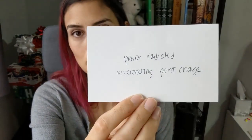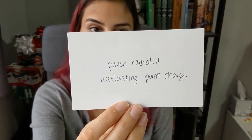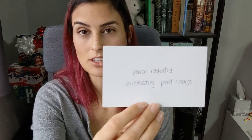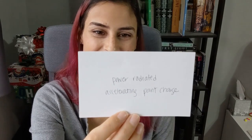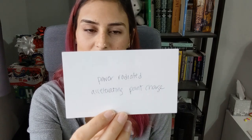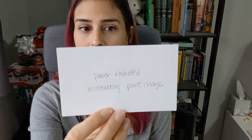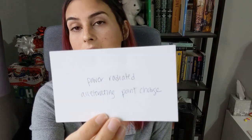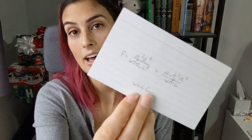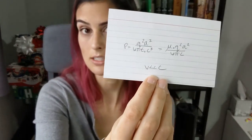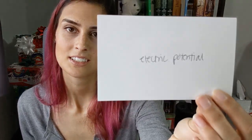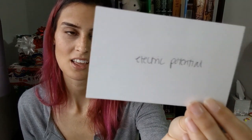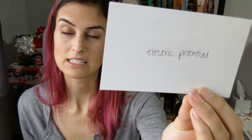The power radiated by an accelerating point charge — a relatively complicated equation. It equals Q squared times A squared over 6 pi epsilon naught C to the third, which is also equal to mu naught Q squared A squared over 6 pi times C, as long as the velocity is much less than C, where C is the speed of light.